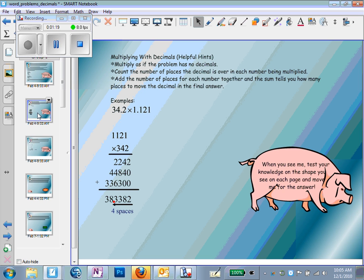Multiplying with decimals - this is a nice review. So when you multiply, you multiply the problem as if there are no decimals. Multiplying is the only operation where you don't line up the decimals. This is really important to make sure that you remember.